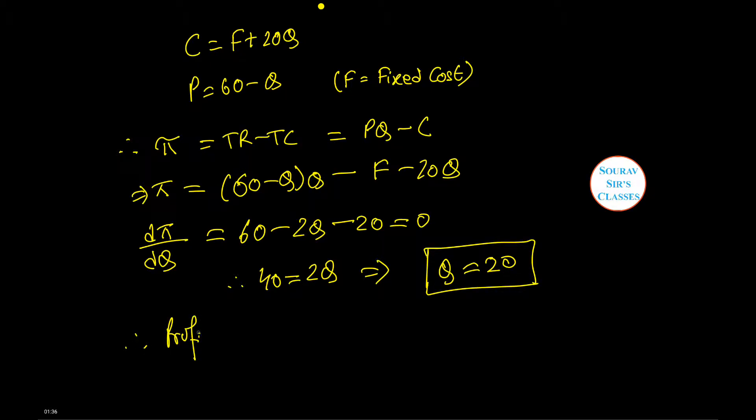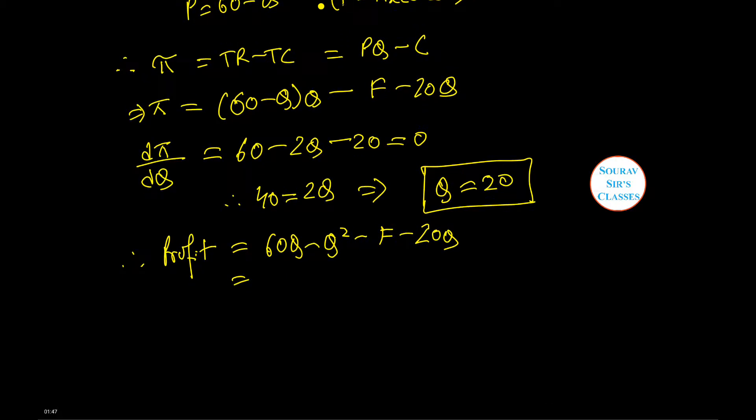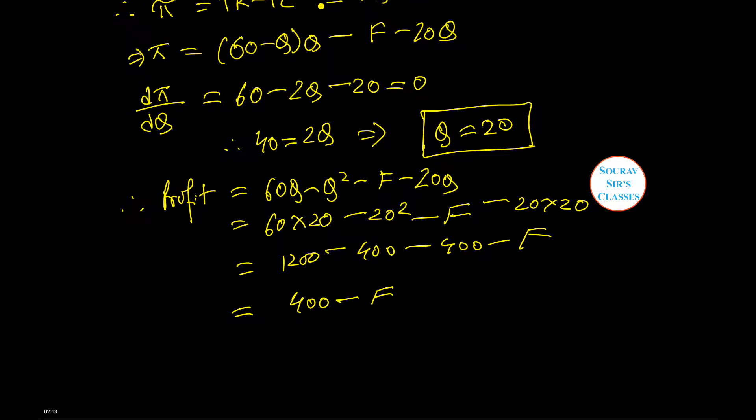Profit equals 60Q minus Q squared minus F minus 20Q. Let us put Q equals 20: 60 times 20 minus 20 squared, which is 400, minus F minus 20 times 20, which is 400. This equals 400 minus F. The price will be P equals 60 minus Q, which is 60 minus 20, or 40 units.